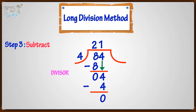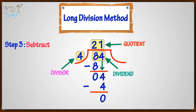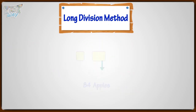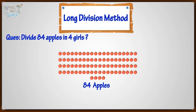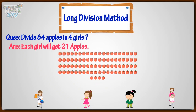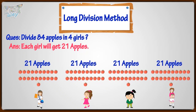Here, divisor is 4. Dividend is 84. Quotient — our answer — is 21. And the remainder is 0. If we divide 84 apples among 4 girls, each girl will get 21 apples.